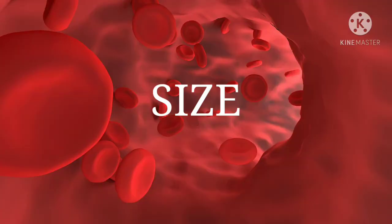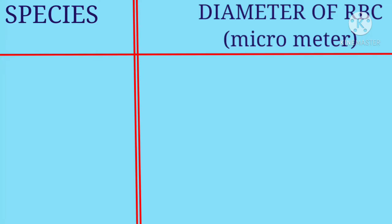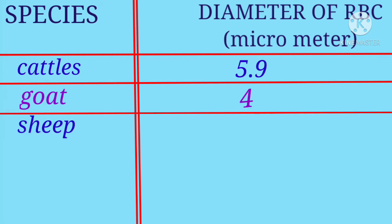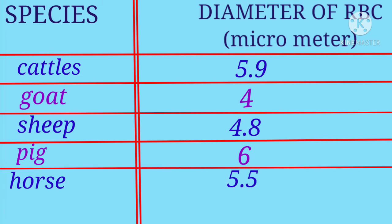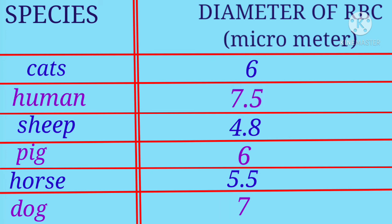Let's study about the size of erythrocytes in different species of animals. Erythrocytes vary in diameter and thickness according to species and nutritional status of the animals. The diameter of RBCs in different species: in cattle it is 5.9 micrometers, in goats it is 4 micrometers, in sheep it is 4.8 micrometers, in pig it is 6 micrometers, in horse it is 5.5 micrometers, in dog it is 7 micrometers, in cat it is 6 micrometers, and in humans it is 7.5 micrometers.